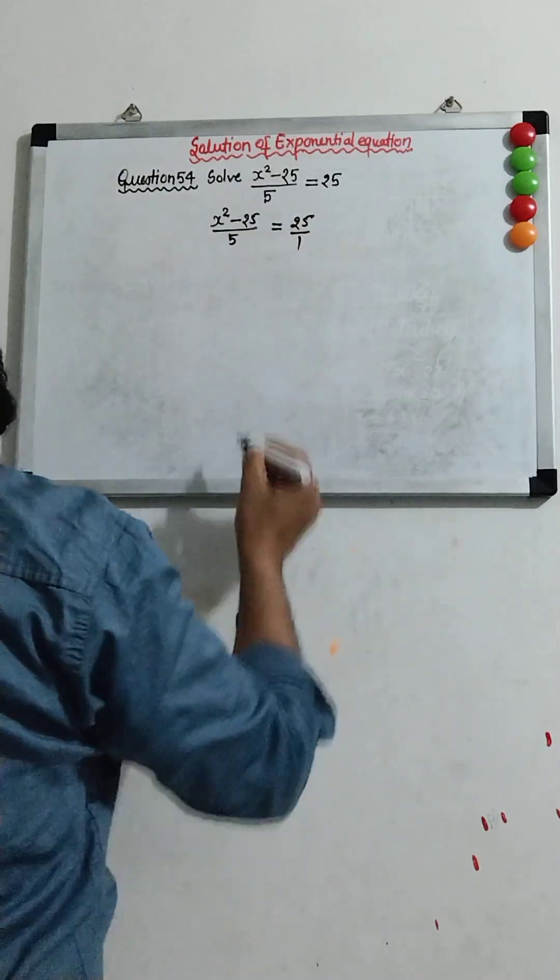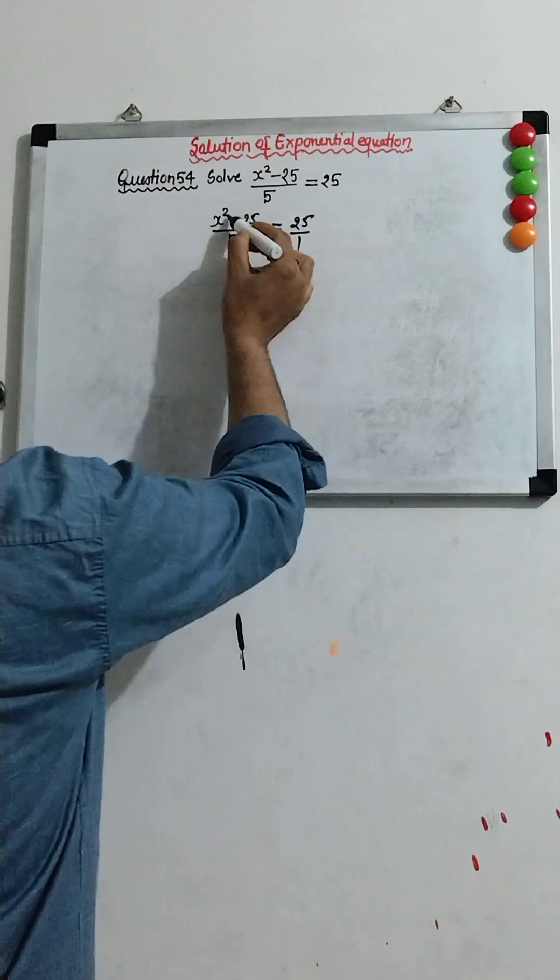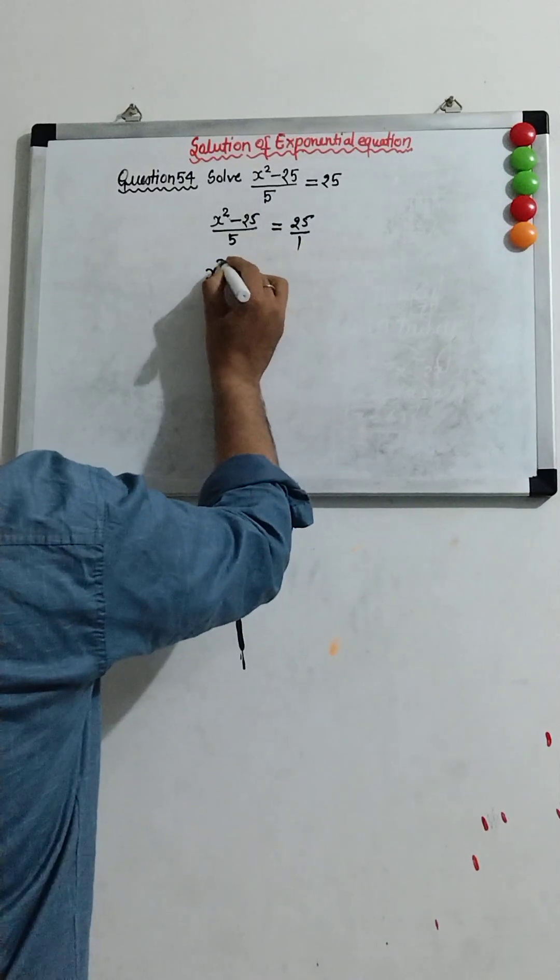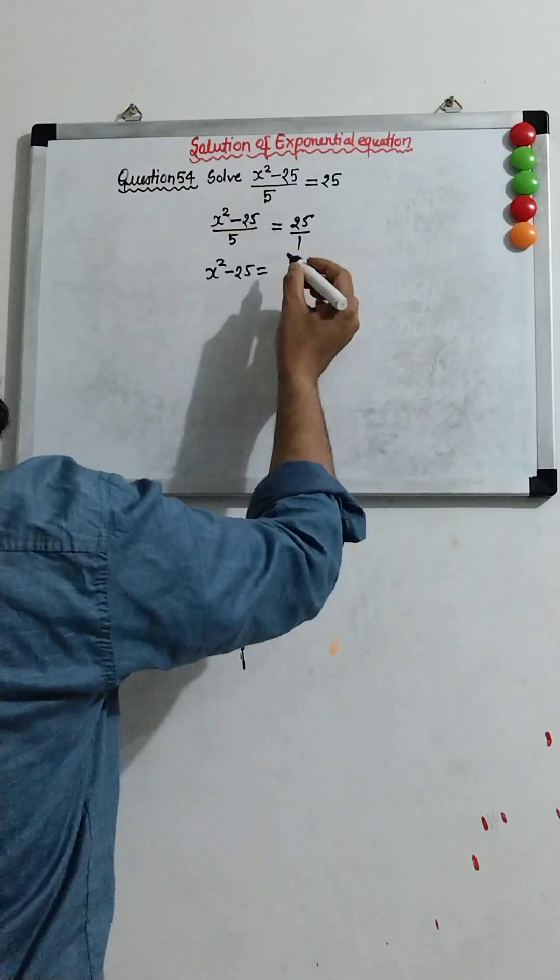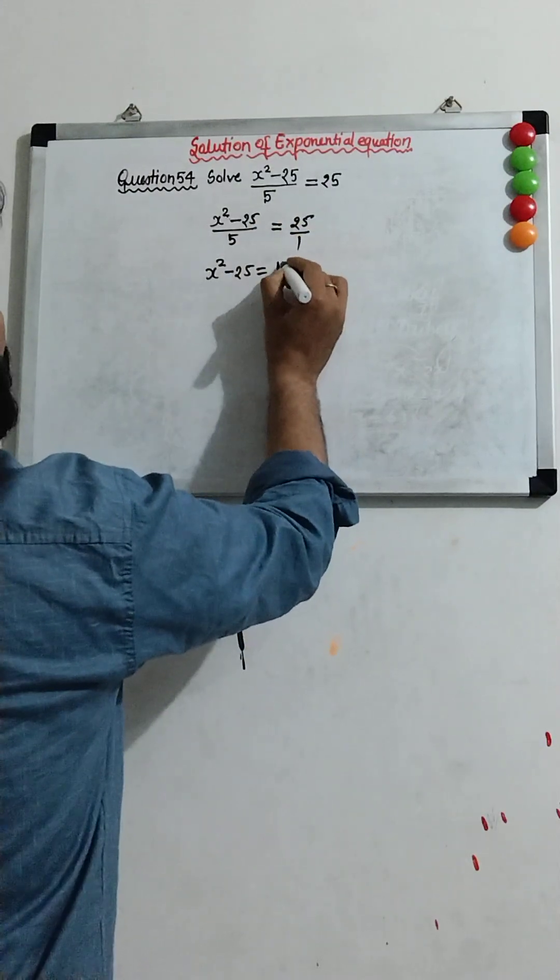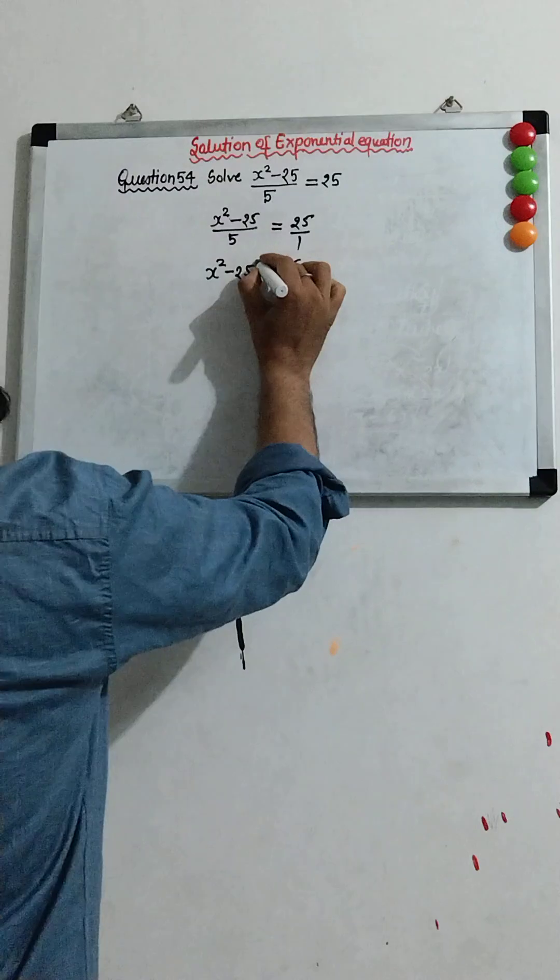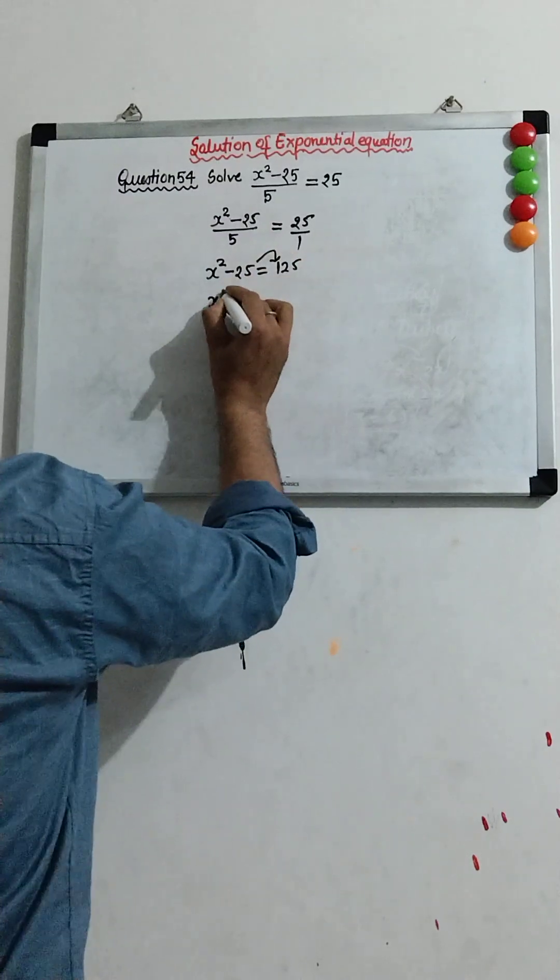Now we have to do cross multiplication. This into this and this into this, we get x² - 25 into 1 = 25 × 5 = 125. Now this goes to the right side, so x²...